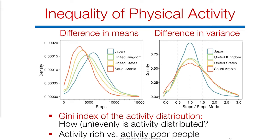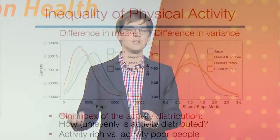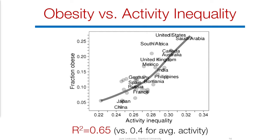We can start asking about the Gini coefficient — the inequality of activity in a population — talking about activity-rich and activity-poor people, the same way we talk about income inequality. What is very interesting is that if you measure the activity inequality of a given country, it correlates really well with the fraction of people that are obese in that country — much better than simply measuring the average number of steps people tend to take.